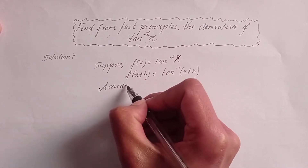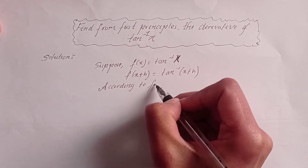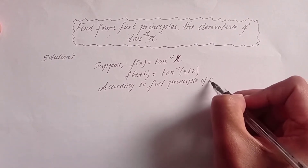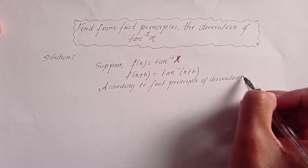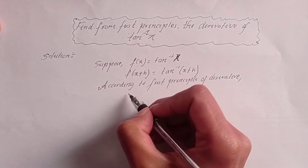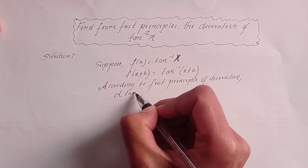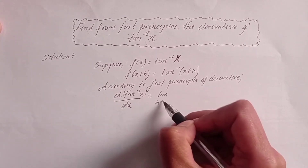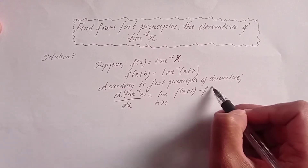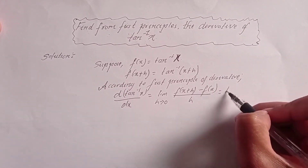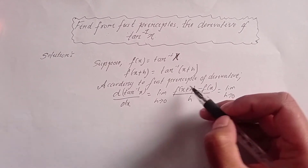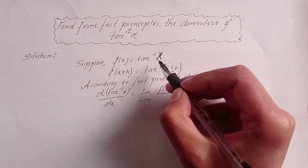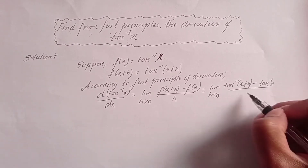According to the first principle of derivative, the derivative of tan inverse x with respect to x is equal to limit as h tends to 0 of [f(x+y) minus f(x)] divided by y. So, that is limit as h tends to 0 of [tan inverse(x+y) minus tan inverse x] divided by y.